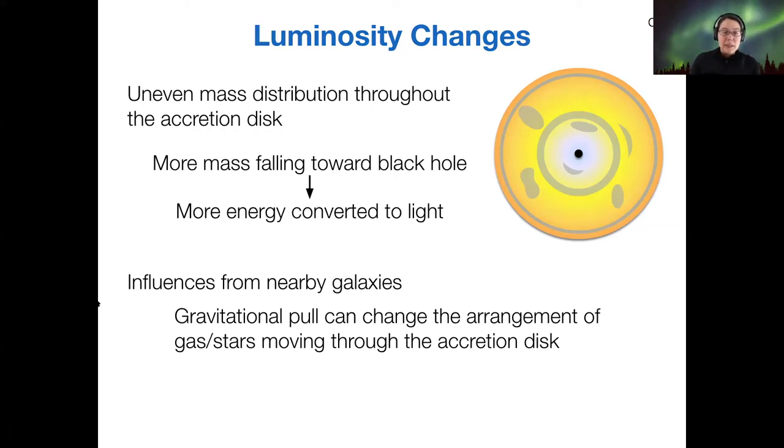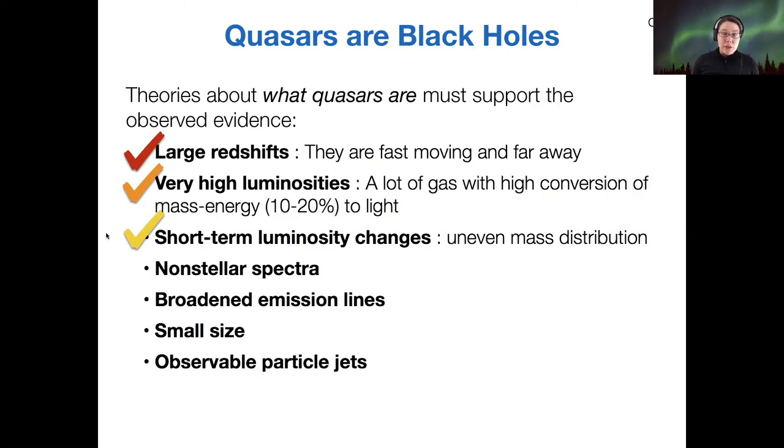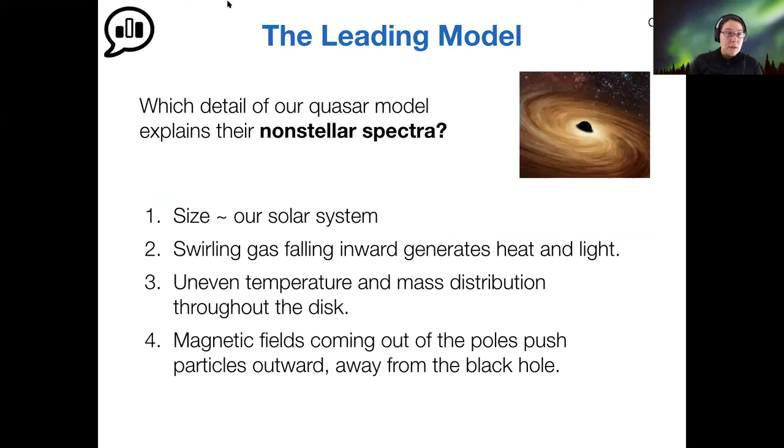I mentioned this because keep this idea in mind as you read for Wednesday's class, when we talk about galaxy collisions and how they can change the output from active galactic nuclei, the quasar as an example of an active galactic nucleus. So we've got our large redshift, our luminosity, and our luminosity fluctuations, all explained. So now why do quasars have this weird spectrum that doesn't look like stellar spectra?